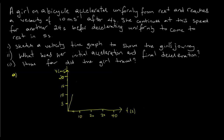After the first four seconds she reaches a speed of 10 meters per second. She then continues at this speed for another 24 seconds — from here to here would be 24 seconds. She maintains her speed of 10 meters per second for another 24 seconds, and then she decelerates uniformly.